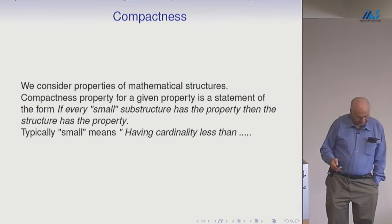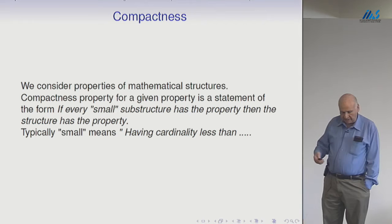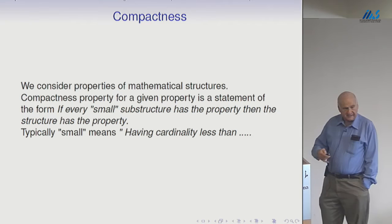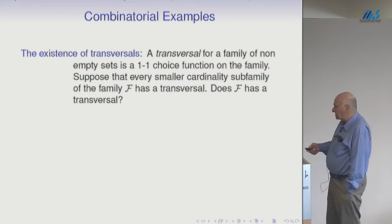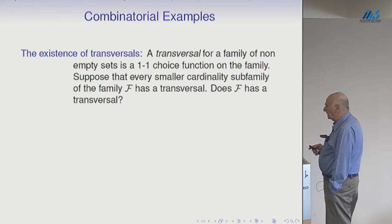Let's look at examples of properties. All the properties I'm listing were things that were considered independently — some would be set-theoretical. I try to keep it set-theoretical in the sense that I don't want to assume too much background in other fields, but these were properties studied on their own merits. The existence of a transversal, mentioned by Laura yesterday: a transversal for a family of non-empty sets is a one-to-one choice function on the family.